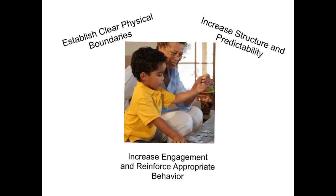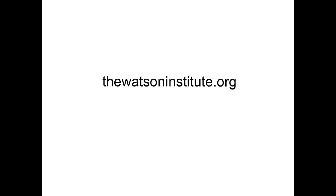When you try to establish clear physical boundaries, increase structure and predictability, and increase engagement and reinforce appropriate behavior, you should see a reduction in problem behavior. For more information, visit thewatsoninstitute.org.